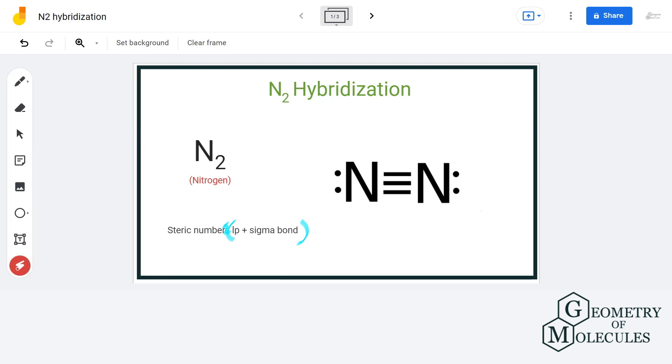Let's have a look at the Lewis structure of N2. We can clearly see that the nitrogen atom is bonded to the other nitrogen atom by a triple bond and has one lone pair of electrons.